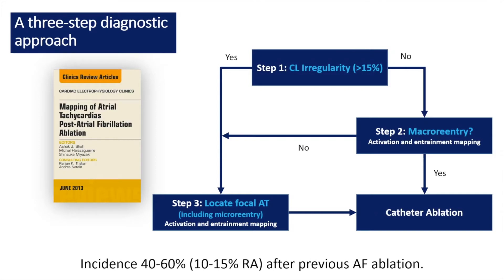The incidence of atrial tachycardia after previous AF ablation can be as high as 40 to 60%. We can use a simple three-step approach for mapping and ablation. In step 1, we look for cycle length regularity. If regular, we first confirm or exclude micro-reentrant atrial tachycardia and ablate accordingly. If cycle length irregularity exceeds 15%, or if micro-reentrant tachycardia is excluded in a regular tachycardia, we locate the focal activity, which can be either true focal or micro-reentrant atrial tachycardia.